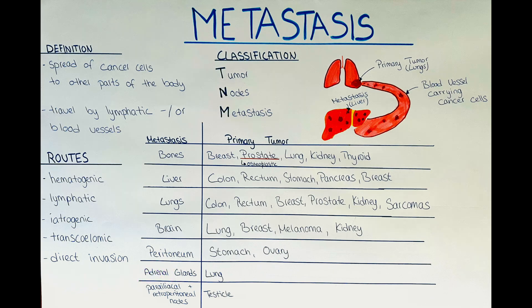The T classification ranges from T0, which means no evidence of primary tumor, to T4, being a large tumor or invasion of nearby structures, with subdivisions indicating increasing tumor size or invasion. The N classification ranges from N0, meaning no regional lymph node metastasis, to N3, which is extensive lymph node involvement, with subdivisions reflecting the number and location of involved lymph nodes depending on the cancer type.